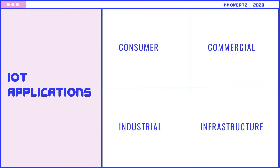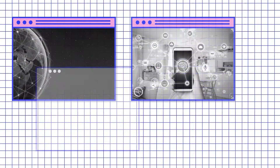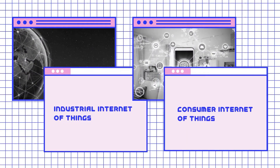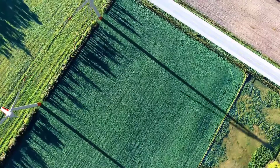There are plenty of different categories of IoT devices and services, but I am highlighting only two of them: Industrial Internet of Things and Consumer Internet of Things.